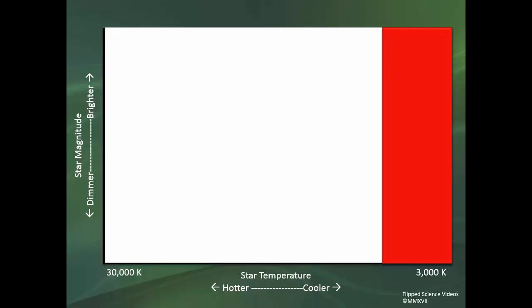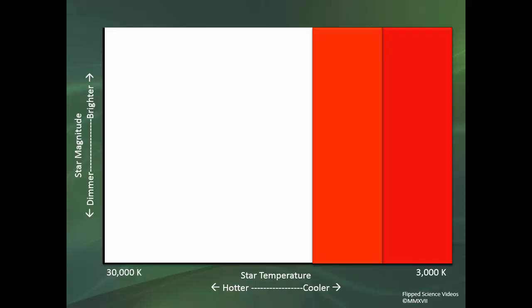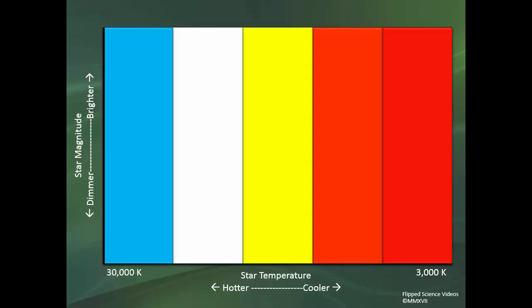So first, across the bottom, we actually have our temperature spans. It goes from cooler on the right to hotter on the left. The cooler stars are going to be red in color. So we have our red, our orange, our yellow, our white stars, and finally our hot blue stars. Because the color of the star is determined by the temperature of the star, as we're looking across the bottom, we are looking at both the temperature and the color of the star.